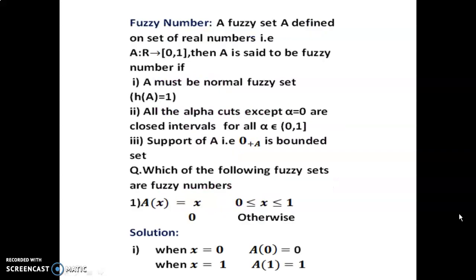Definition: Fuzzy number. A fuzzy set A defined on the set of real numbers, i.e., a function A from real numbers to the closed interval [0,1]. Then A is said to be a fuzzy number if: Condition 1 — A must be a normal fuzzy set, i.e., height of A equal to 1. Condition 2 — all alpha-cuts except alpha equal to 0 are closed intervals, for all alpha belonging to the semi-open interval (0, 1]. Here 0 is not included; 1 is included.